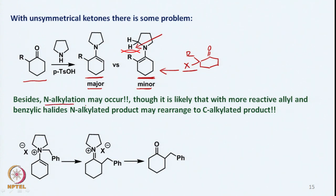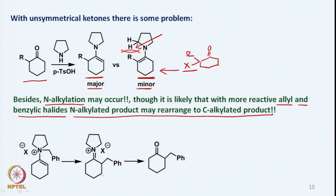Besides C-alkylation, N-alkylation also occurs. With allylic and benzylic halides, the N-alkylated product may rearrange to the C-alkylated product: after N-alkylation, rearrangement gives C-alkylation, and hydrolysis then gives the corresponding ketone. But if such an N-to-C rearrangement does not take place, there is a problem. Nevertheless, enamines have been a very useful synthetic method.